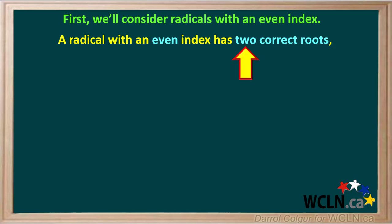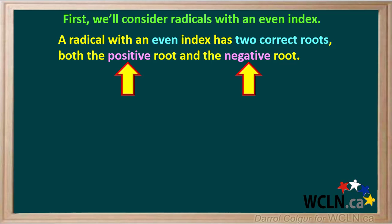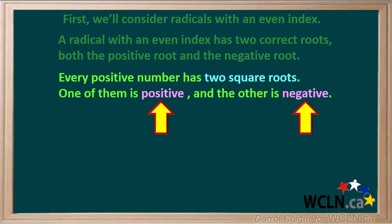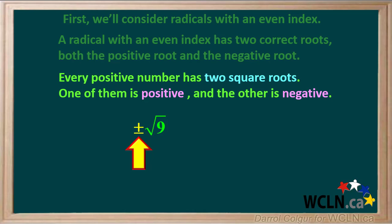A radical with an even index has two correct roots — both the positive root and the negative root. Specifically for square roots, every positive number has two square roots: one positive and one negative. For example, the square root of 9 can either be positive 3 or negative 3. We can shorten this by stating that the positive or negative square root of 9 is positive or negative 3.